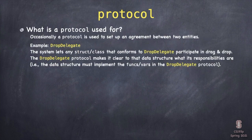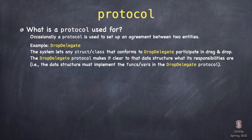Protocols can also be used to set up an agreement between two entities. For example, DropDelegate is a protocol that lists all the functions you need to implement if you want drag and drop to work on you — so things can be dropped onto your view. In this case, the protocol is doing nothing more than defining what those functions are and letting the code that's going to receive the drop say, 'I sign up to do that.' That's a much simpler use of protocols than all that restriction stuff.